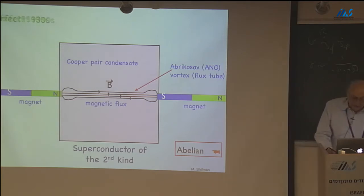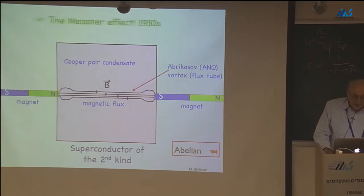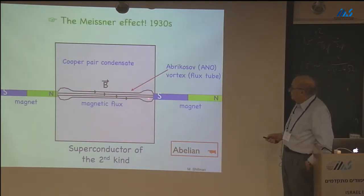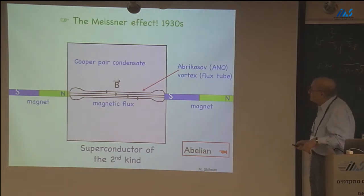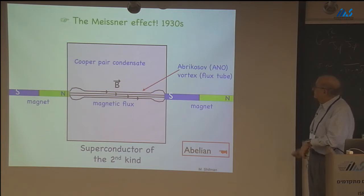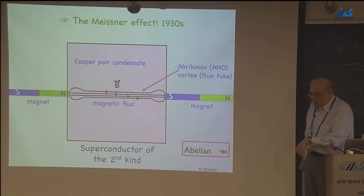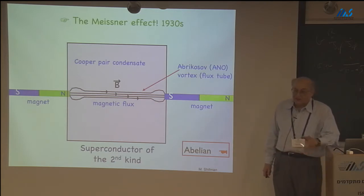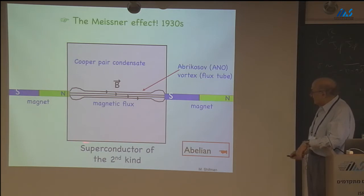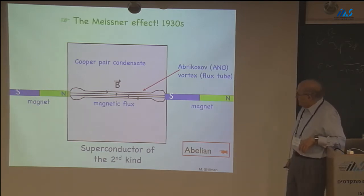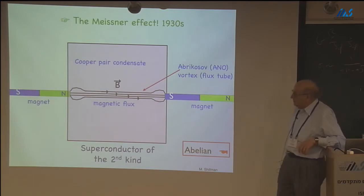This is the first example of the solitonic string in field theory. It was discovered — constructed — 60 years ago in the context of the Ginzburg-Landau model of superconductivity by Alexei Abrikosov, who at that time was just a graduate student. Landau didn't particularly like this paper, so it was left in Abrikosov's desk drawer for some time before it was published. Fortunately it was, and 50 years later it brought him the Nobel Prize — so it was a good graduate student work.